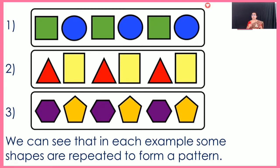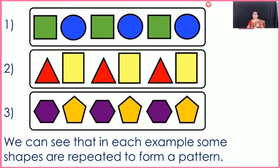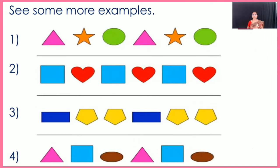Here the pattern is formed. You can see the pattern in the second and third examples. A particular order is used to create these patterns. In some examples, two shapes are used to create the pattern. In others, three shapes are used. But one particular order of shapes is used repeatedly to create the pattern.